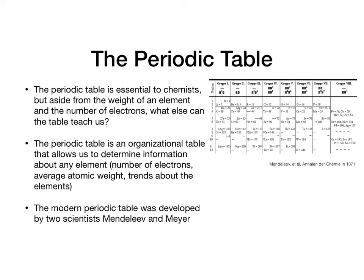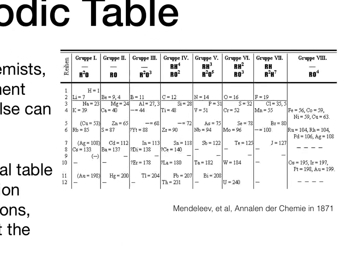The periodic table is an organizational chart that allows us to determine the number of electrons, average atomic weight, and trends. The modern periodic table was developed by two scientists, Mendeleev and Meyer. As you can see over here, this is the figure from Mendeleev's paper.